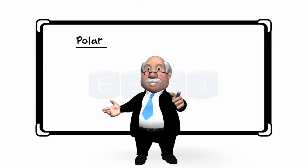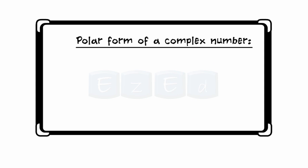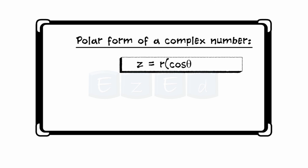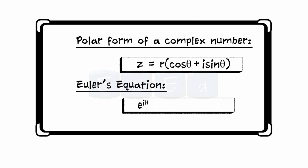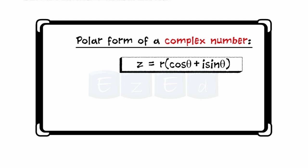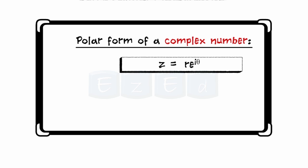Recall the polar form of a complex number: z = r(cos θ + i sin θ). By Euler's equation, e^(iθ) = cos θ + i sin θ, so we obtain another way to denote a complex number — the exponential form: z = r·e^(iθ), where r is the modulus and θ is the argument of z.